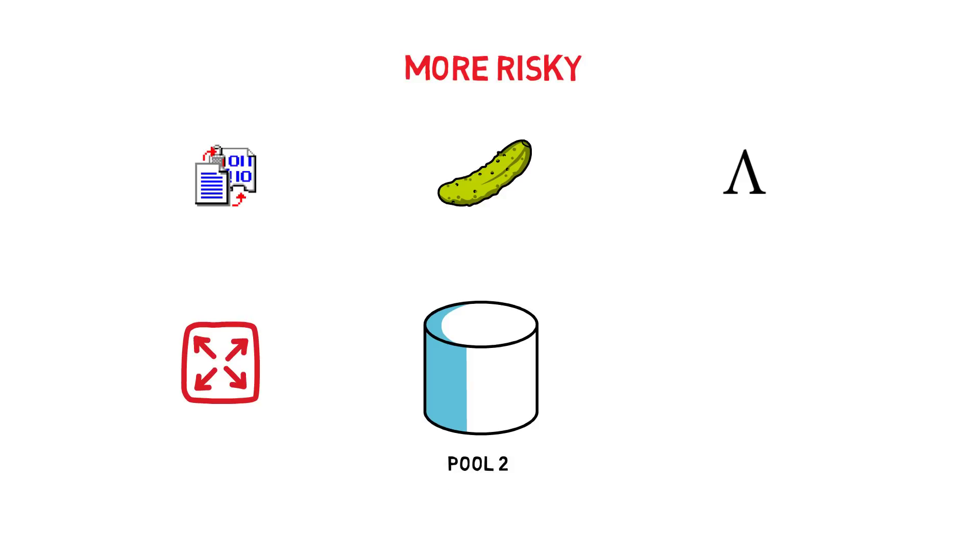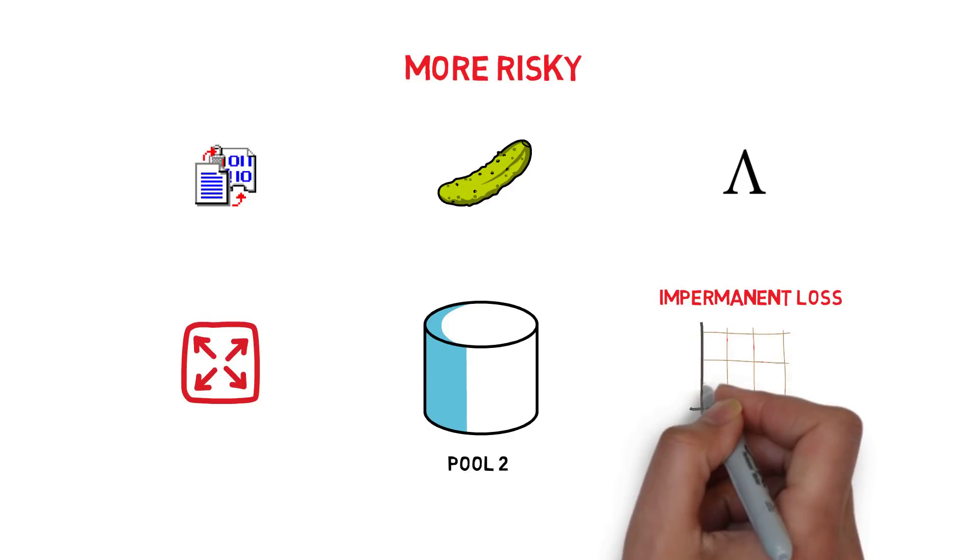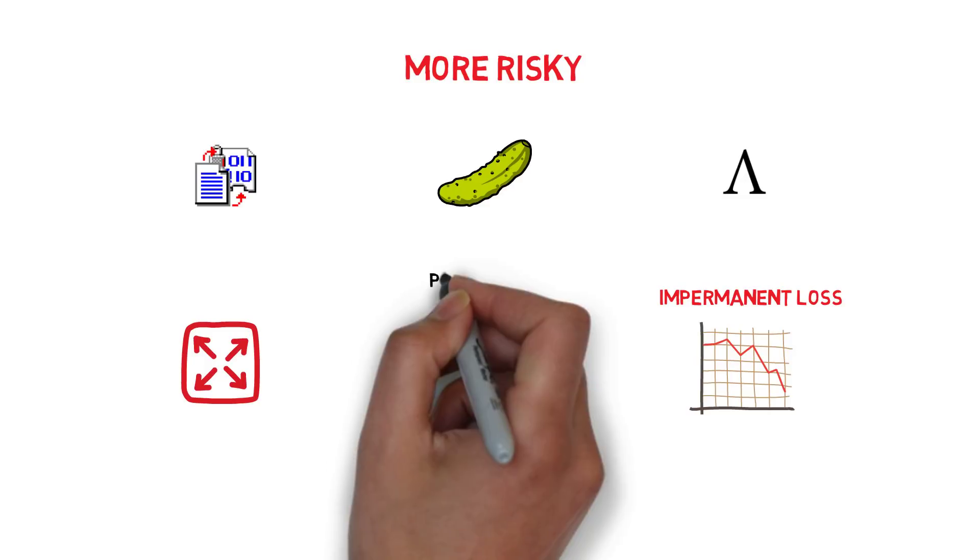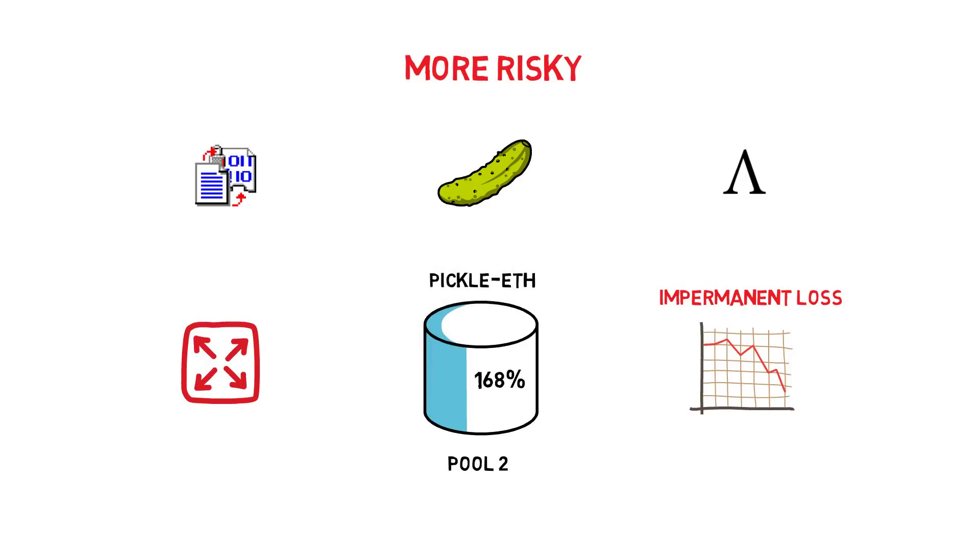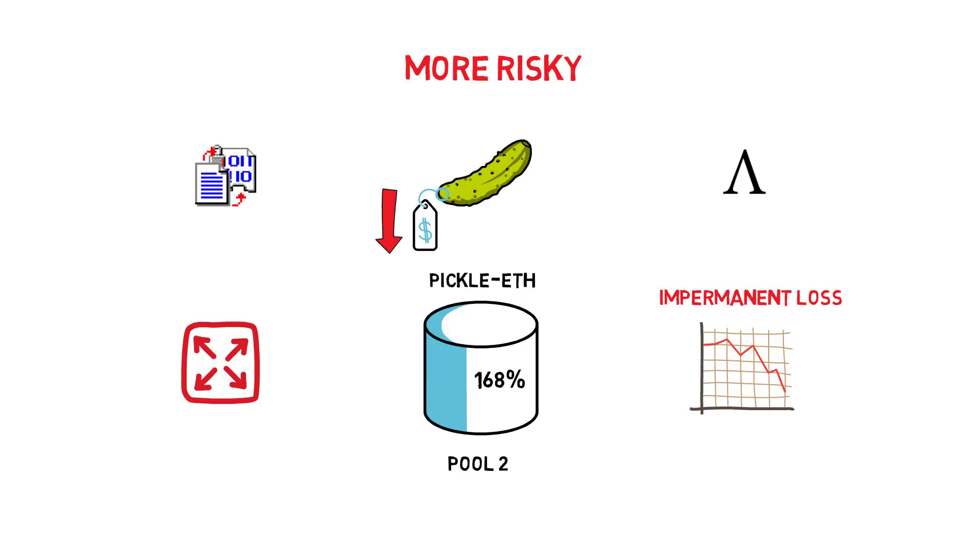The main risk here is impermanent loss, especially in a downtrending market. For example, although you can get 168% APY on the Pickle ETH pair, you are additionally exposed to the price of Pickle. If the price of Pickle starts going down, you'll lose some of your ETH because you are supplying liquidity to the 50-50 Pickle ETH Uniswap pool.